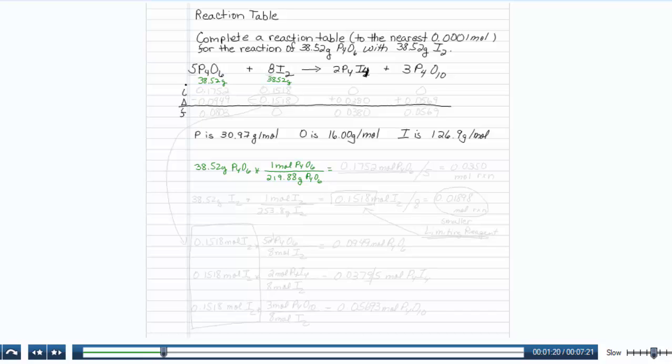Now I'm going to find out how many times I can do the reaction. I'll do that by dividing it by the coefficient in front of P4O6, which you can see is 5. So that divided by 5 gives me 0.0350 moles of reaction. That's how many times I can run the reaction.